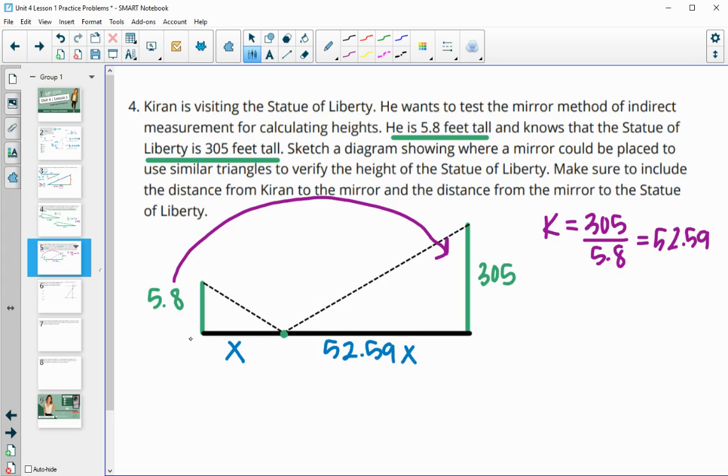And it doesn't tell us how far apart these are. So it doesn't tell us how far Kieran is standing from the Statue of Liberty. Otherwise, we could divide this out, but it doesn't say that. So you can just pick a number here. So if I said, let's say Kieran is standing 25 feet, okay? He could be 25 feet from the mirror. If this is the case, then we would do 25 times 52.59. And so it would be 1,314.75 feet away from the Statue of Liberty. So this first part would be 25. This second part would be 1,314.75. That would be something that would be fine.